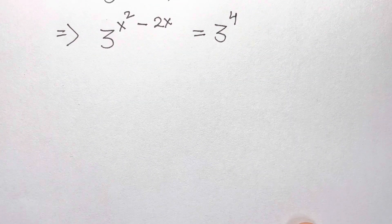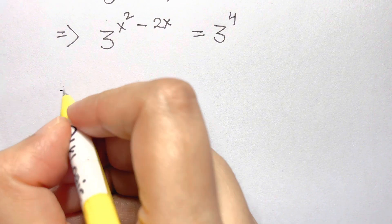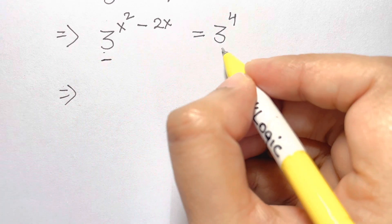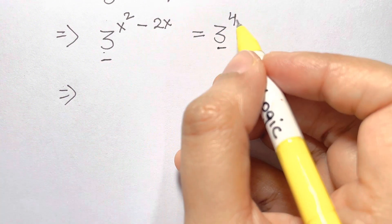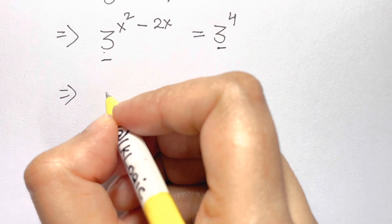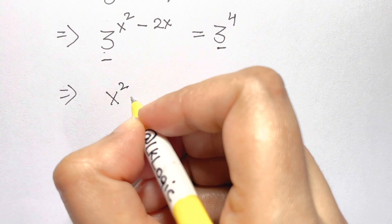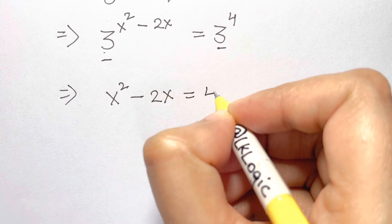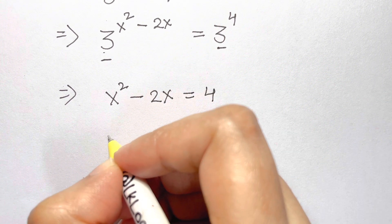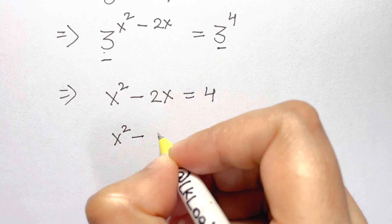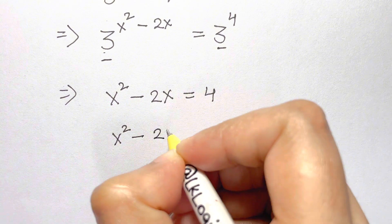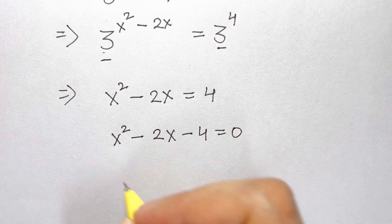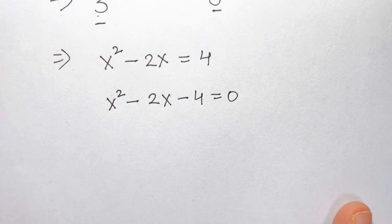Now, since we have the same bases, we can equate the powers. So we have x² minus 2x equals 4. Bringing everything to one side, we have x² minus 2x minus 4 equals 0.